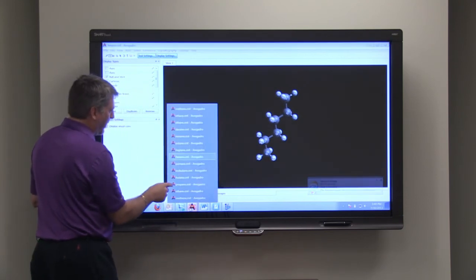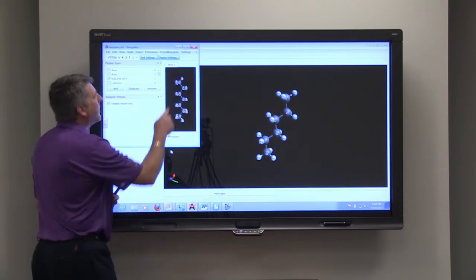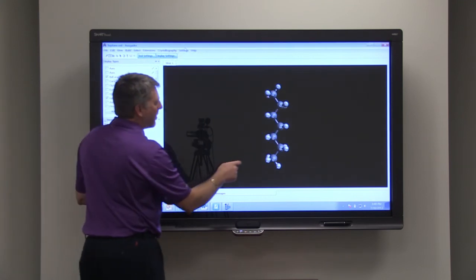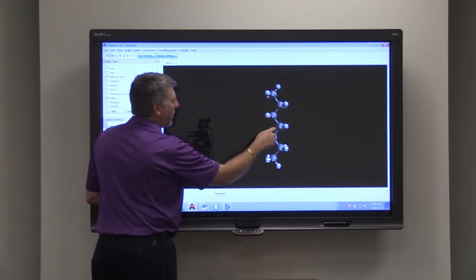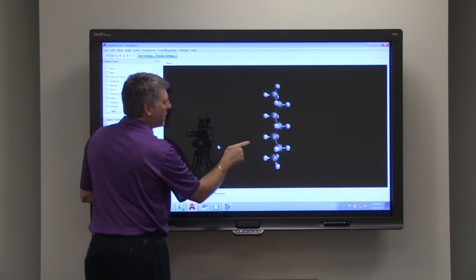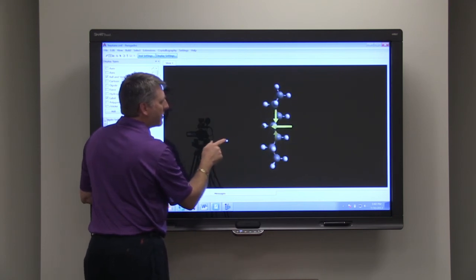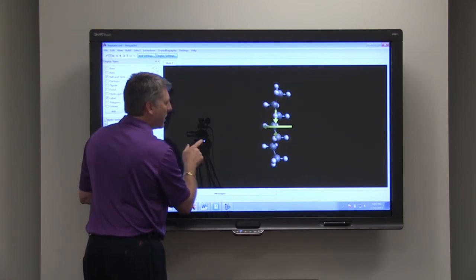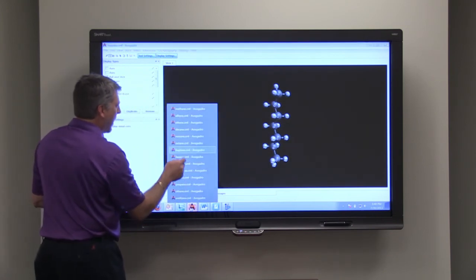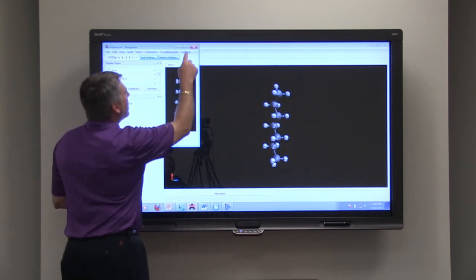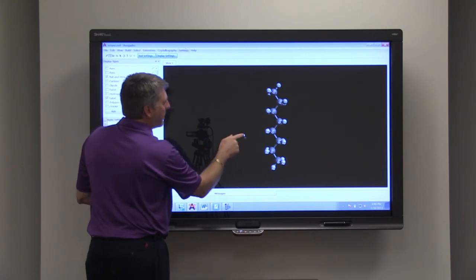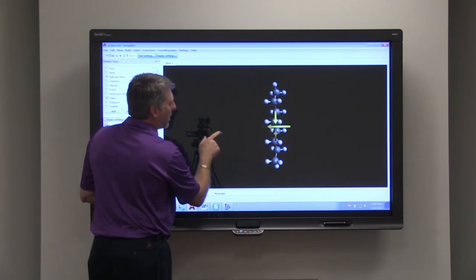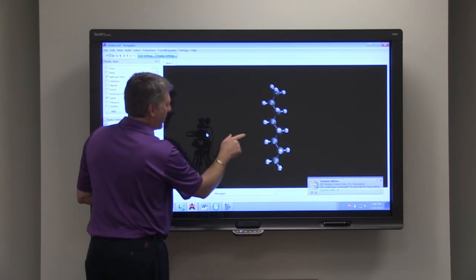And then we go to heptane with its seven carbons. One, two, three, four, five, six, seven. And you can see all the hydrogens that are attached there. Octane, of course, will have eight. And all we're doing is just making our chain longer, chain of carbons and hydrogens.